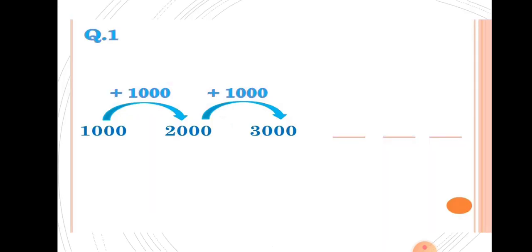First question: 1000, 2000, 3000, dash, dash, dash. From 1000 to 2000, increase by 1000. From 2000 to 3000, increase by 1000.